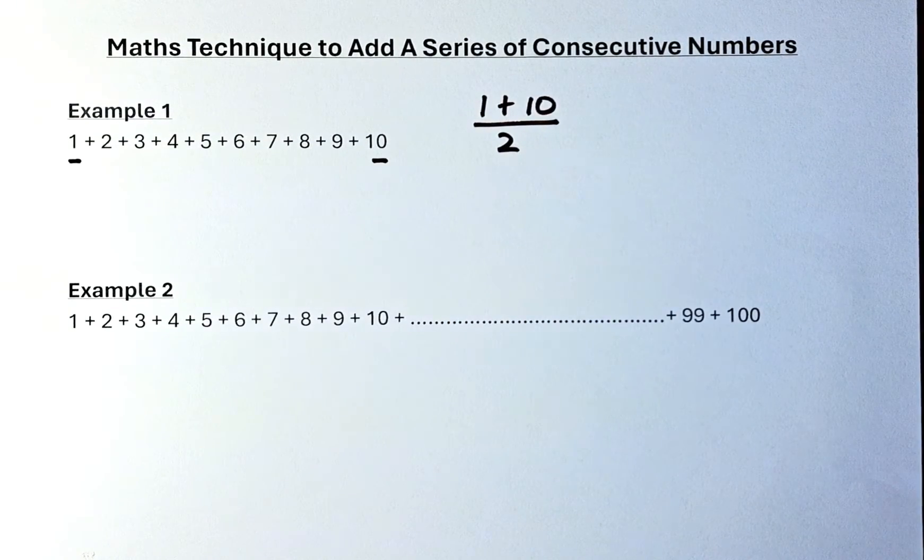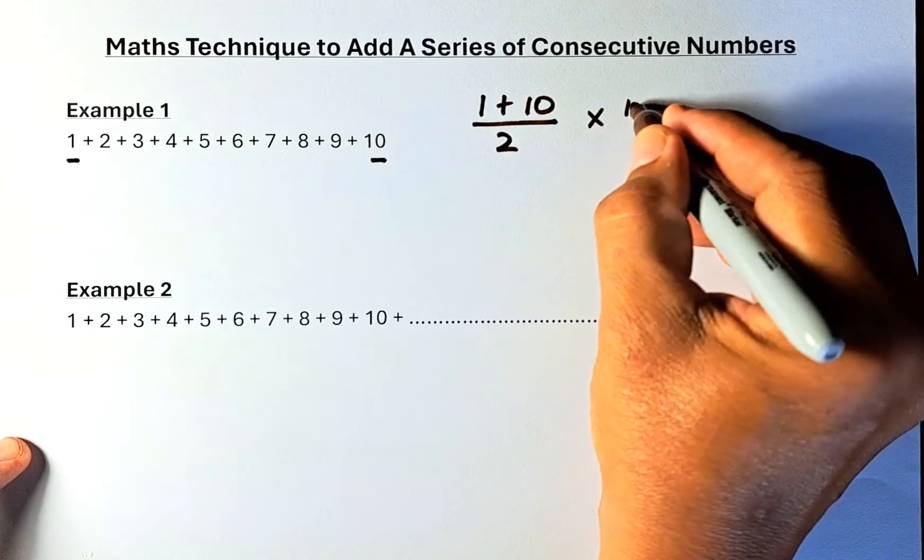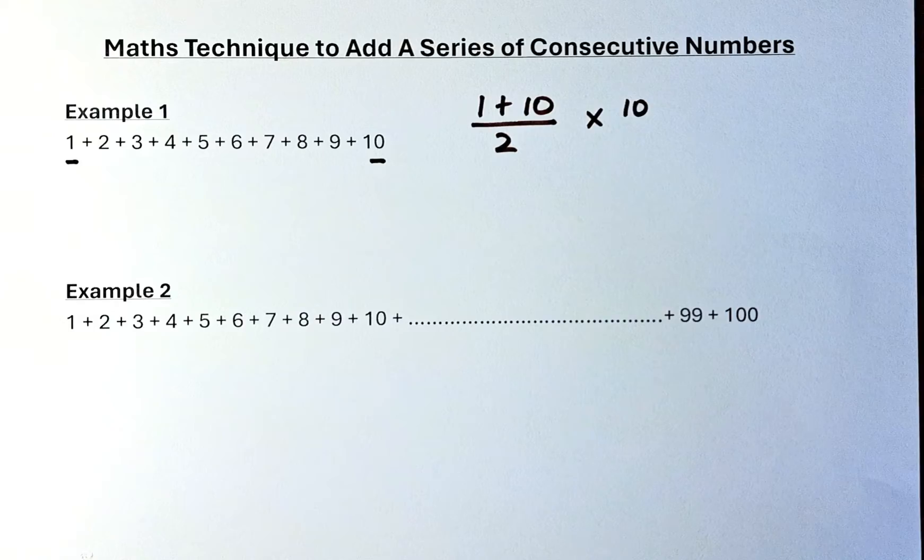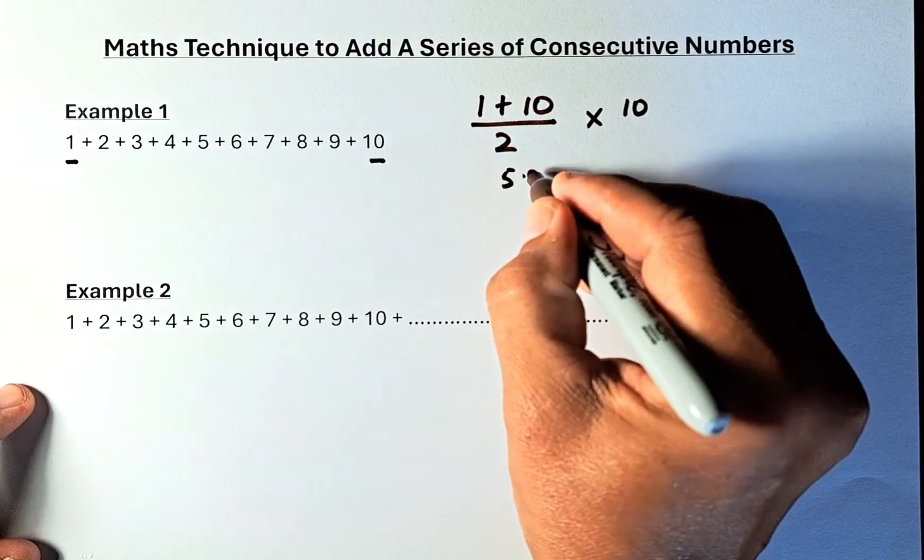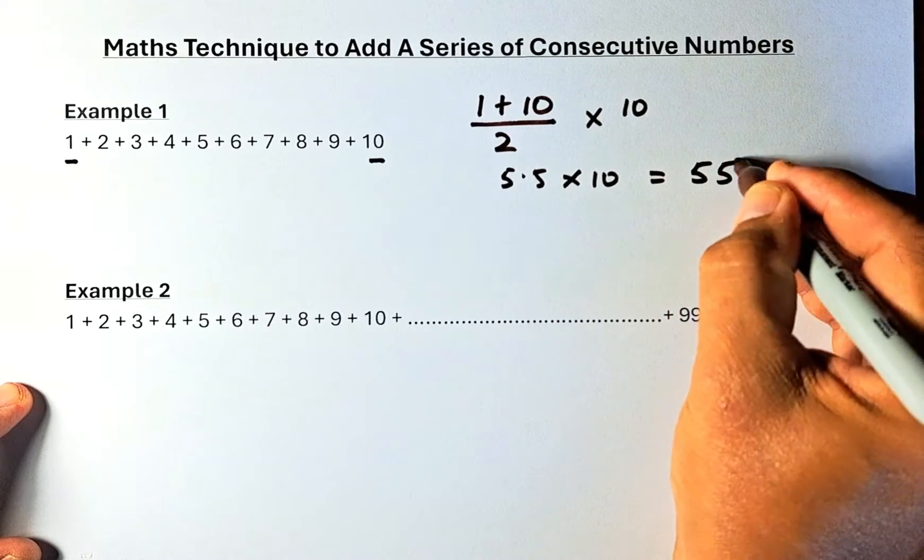Then what you're going to do is that you are going to multiply the total numbers. So total numbers, they are from 1 to 10, they are 10 numbers, so you're going to multiply by 10. So what you do is that 1 plus 10 is 11. 11 divided by 2 is 5.5 and you multiply by 10 and the sum is going to be 55.